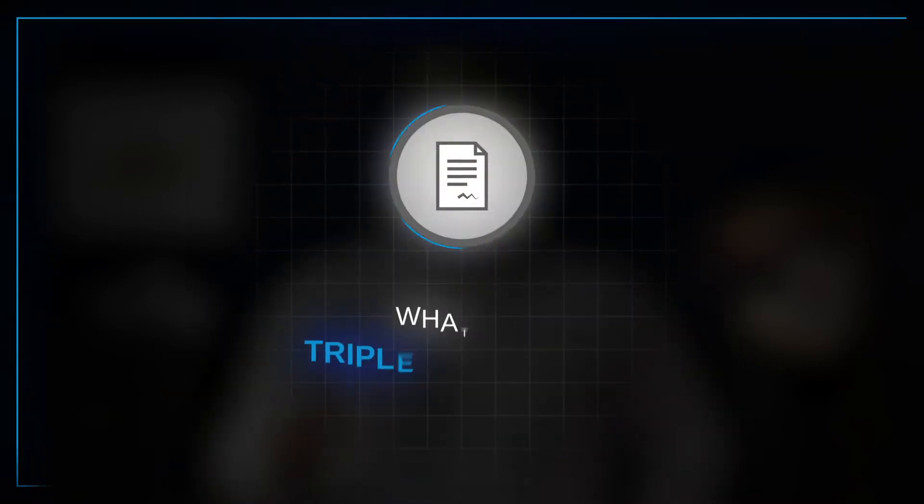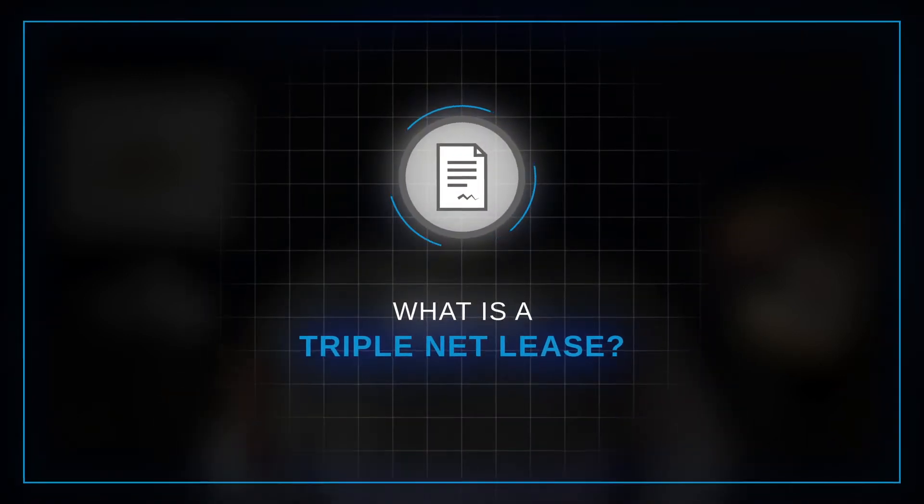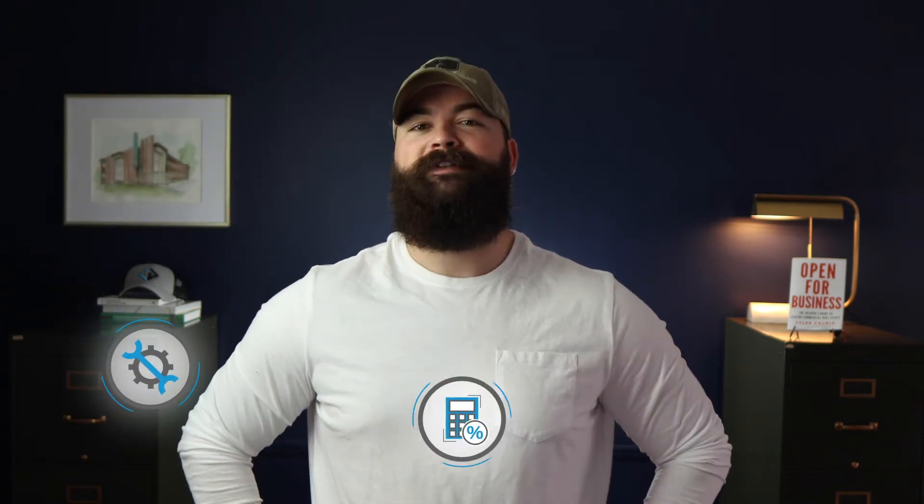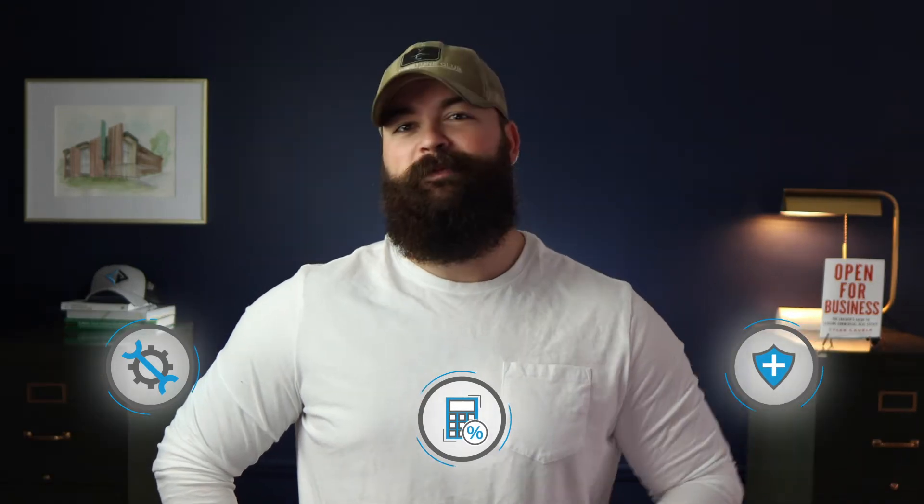First, what is a Triple Net Lease? A Triple Net Lease is one of the more common lease structures that you'll find in commercial real estate. NET stands for the expenses that are passed through directly to the tenant in addition to their base rent. Often called additional rent, these pass-through expenses include common area maintenance, property taxes, and building insurance. These expenses are passed on directly to the tenants on a monthly, quarterly, or annual basis based upon their pro-rata share of the premises.